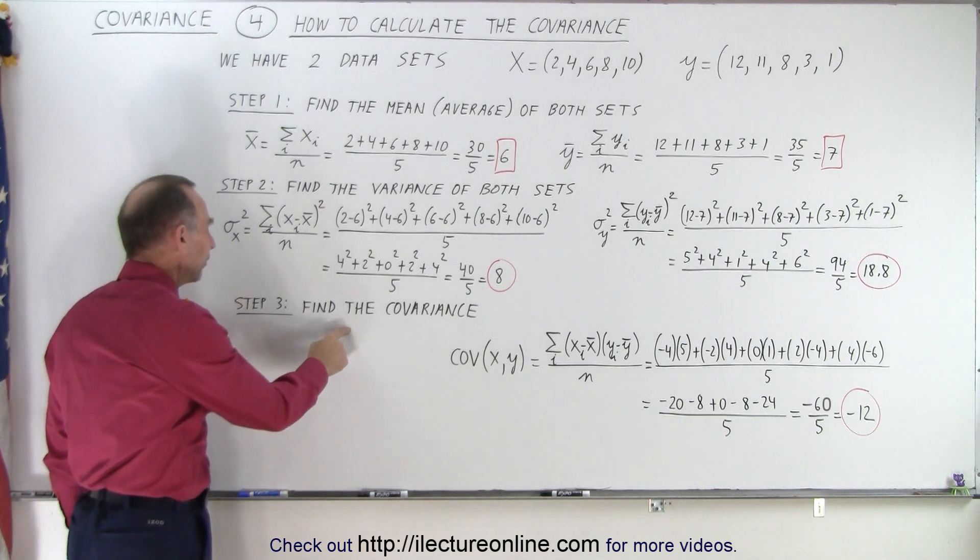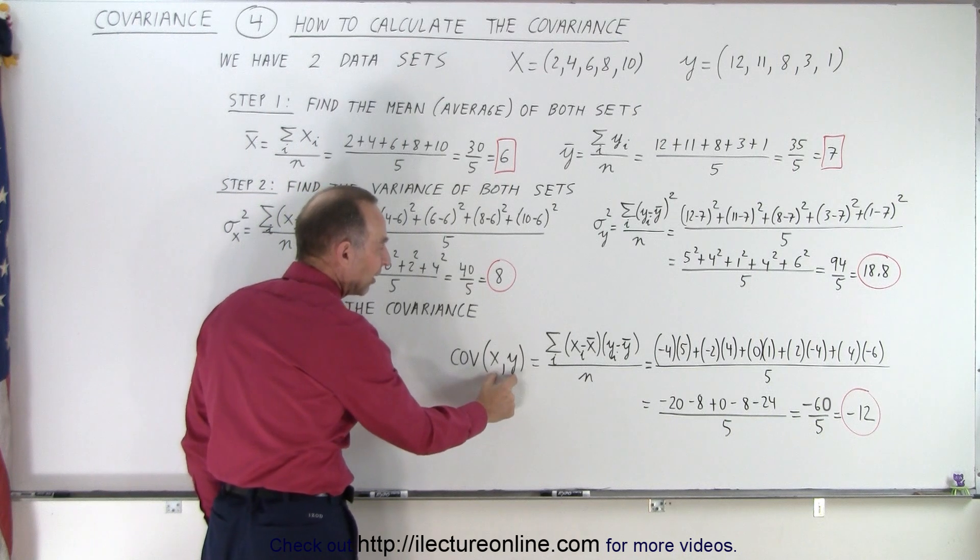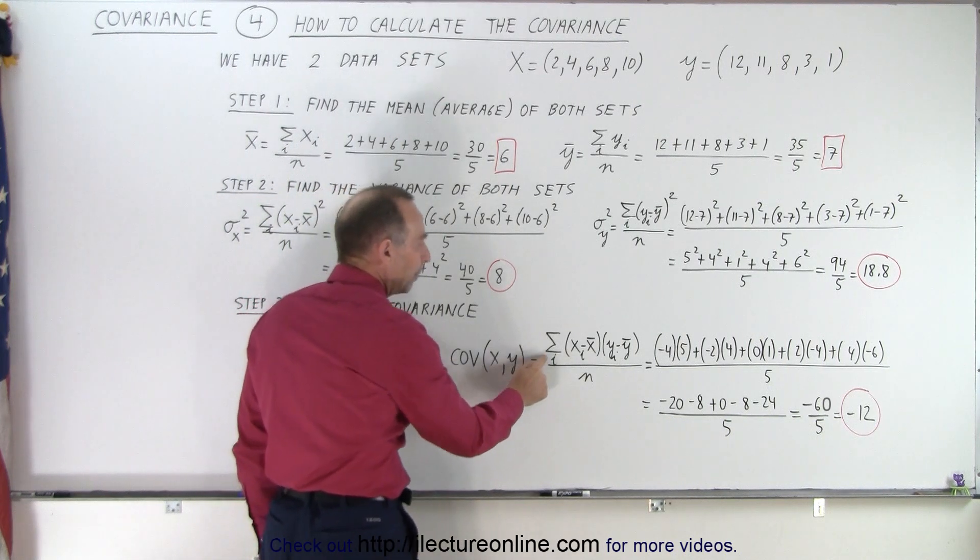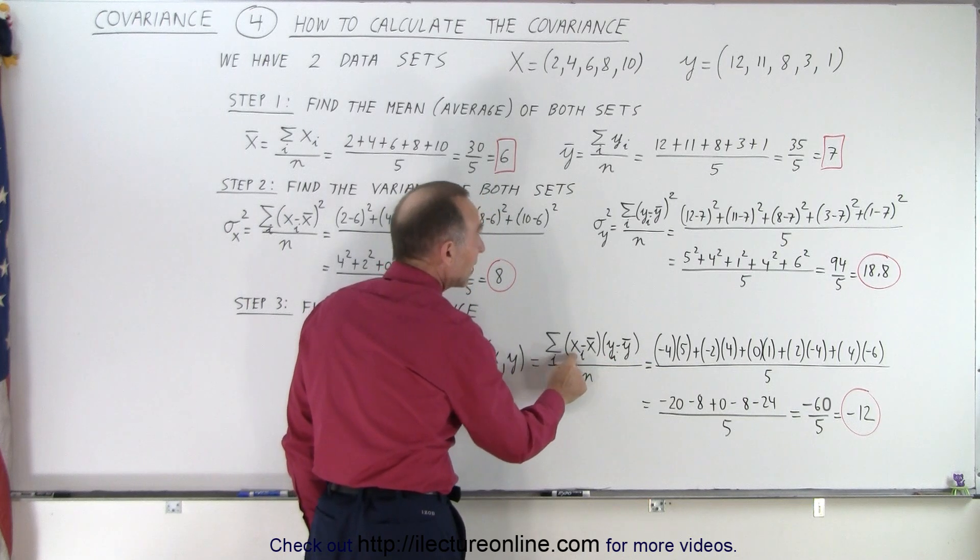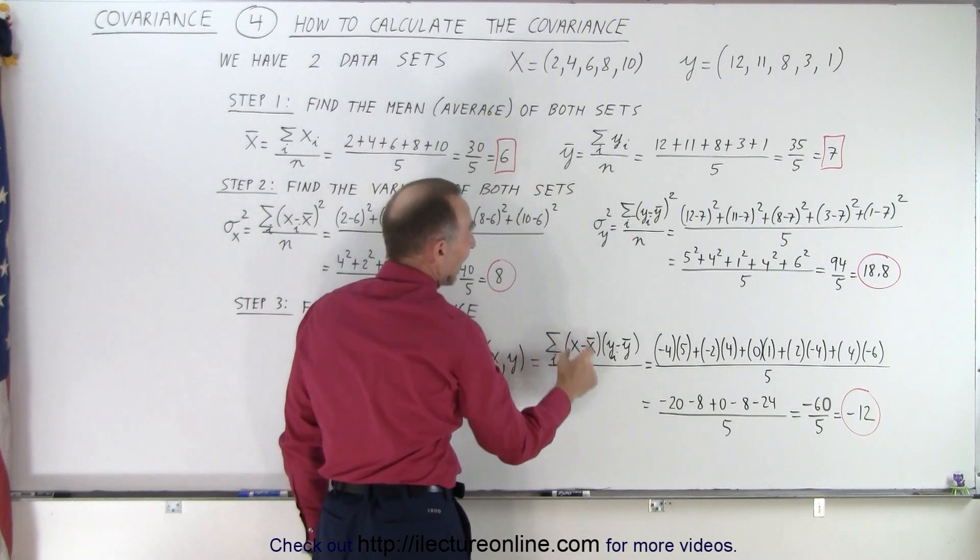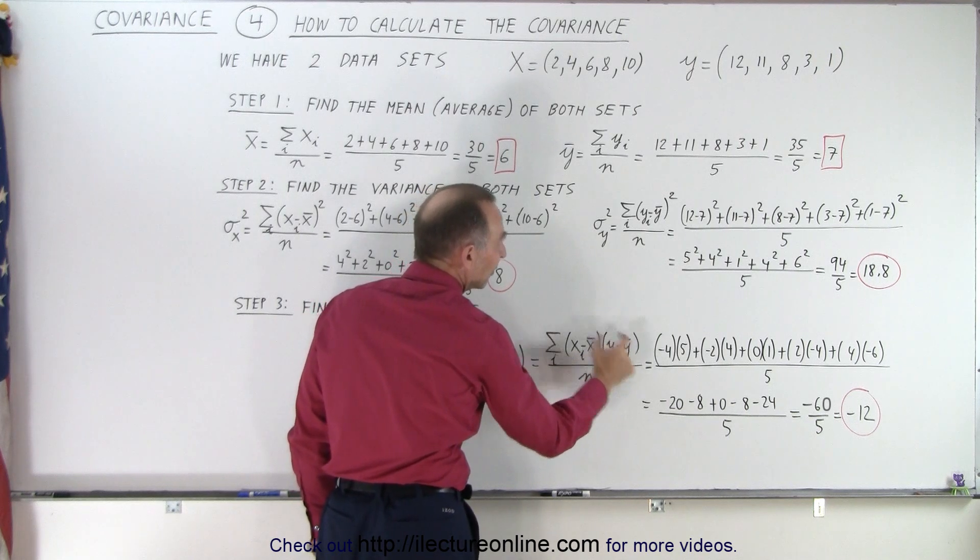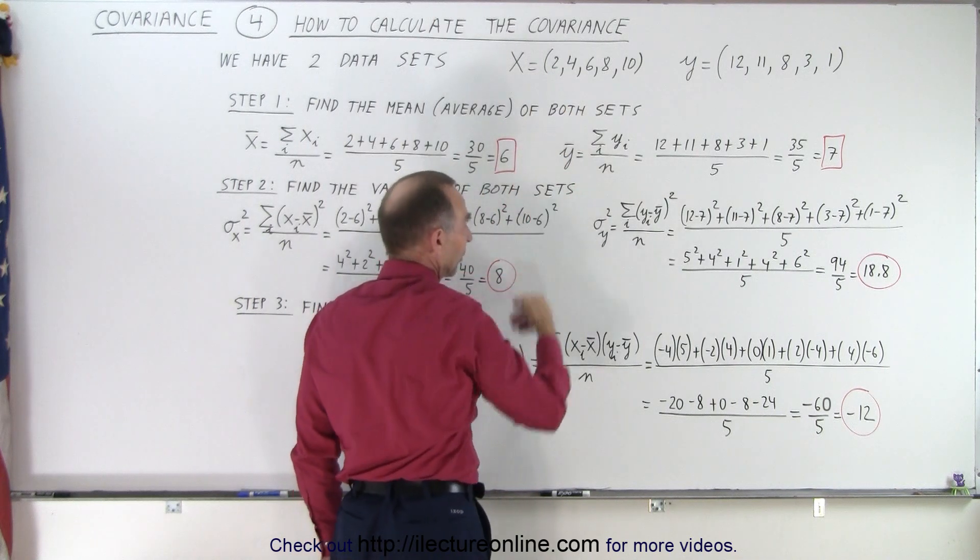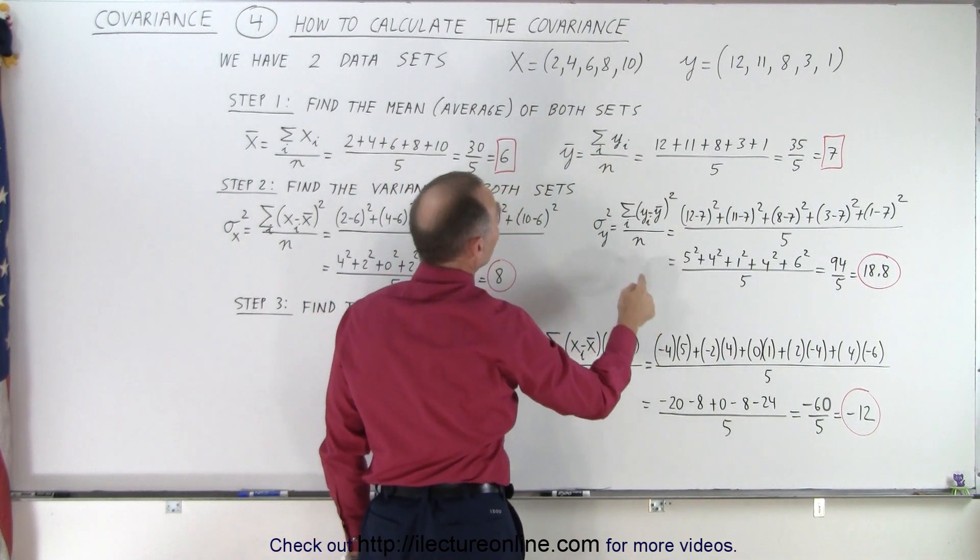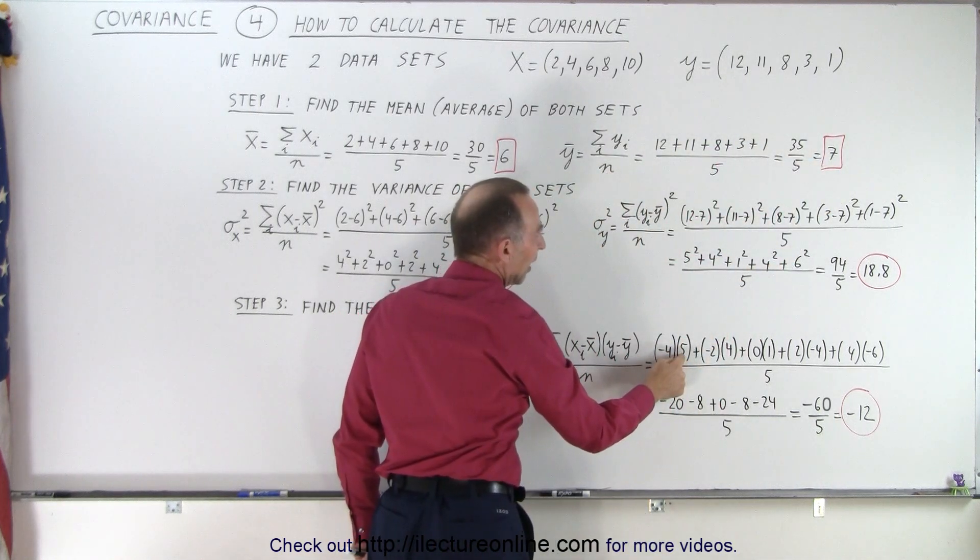Then we want to find the covariance, step three. To find the covariance of the two datasets, we take the sum of the product of the difference between the first number and the average from the first dataset times the first number minus the average of the second dataset. Notice if we take two minus six, we end up with negative four. Here we take 12 minus seven, we get a positive five.